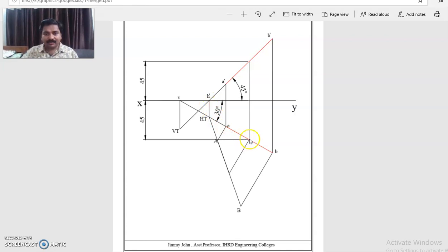Similarly, through M, this point is M, through M you can draw a line 30 degrees. Because this is the angle made by the top view with the XY line. So that will meet the XY line at small v.